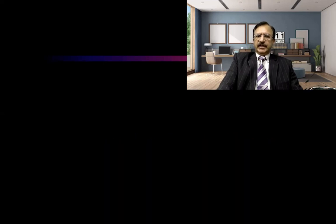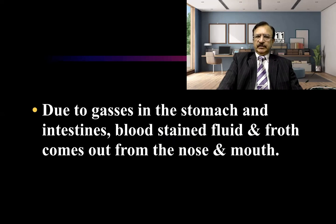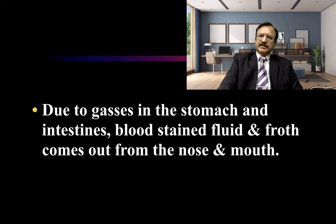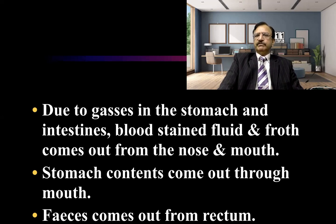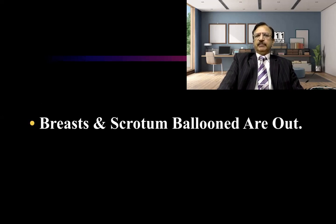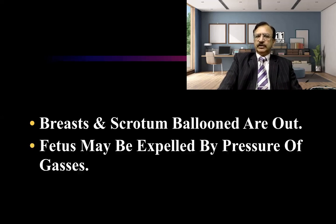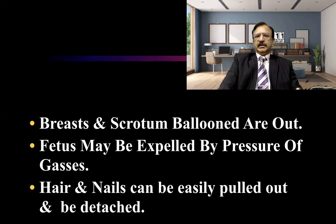This is a picture and model showing the protrusion of the tongue and balloonment. This leads to distension of the abdomen, and due to the pressure effect of gases in the stomach and intestine, blood-stained fluid and froth start coming out of the nose and mouth. Stomach contents come out from the mouth, and feces may come out from the rectum. The breast and scrotum are ballooned out. If the lady is pregnant, the fetus may be expelled out due to the pressure effect. The hair and nails can now easily be pulled out and detached.